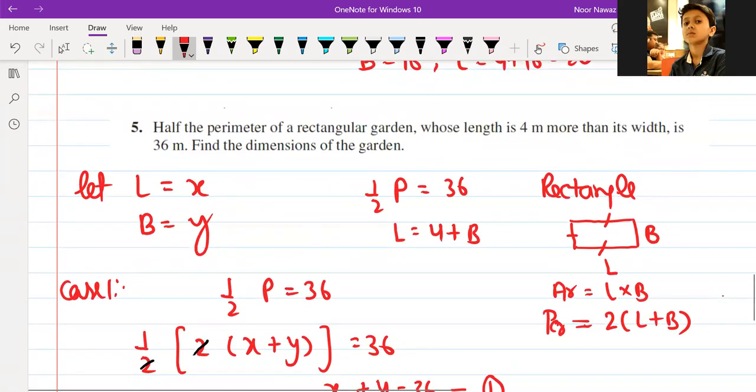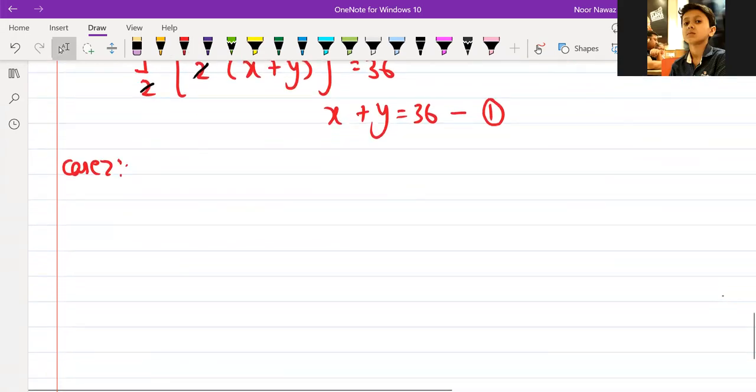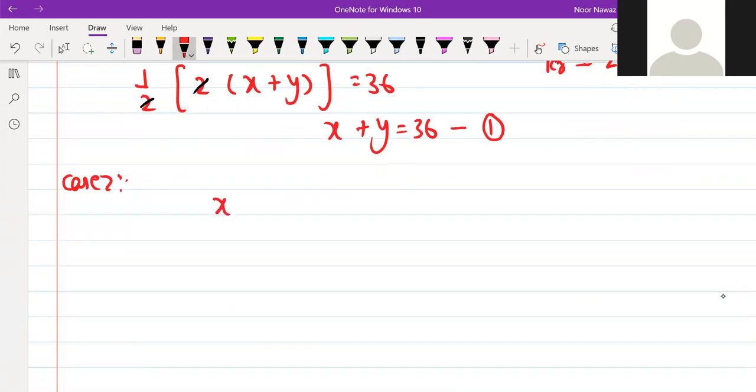Case 2, whose length is 4 more than its breadth. Length is 4 more than its breadth. This is the second case. Length is 4 more than its breadth. So here substitution, put in 1.